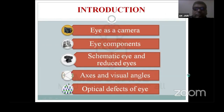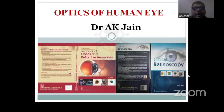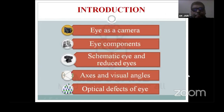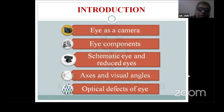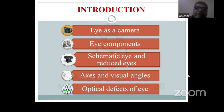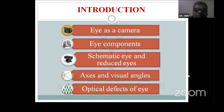First, we will cover: eye as a camera, what are the eye components, what do we mean by schematic and reduced eyes, what are the visual axis and visual angle, and optical defects of the eye. These will be our headings to understand the optics of the eye.